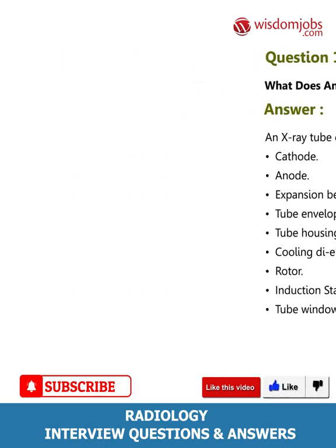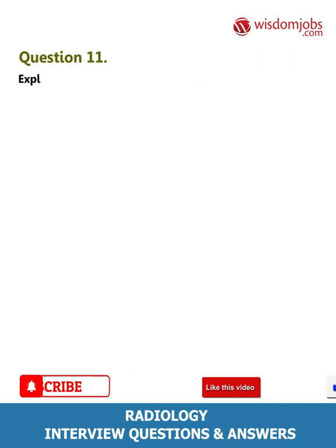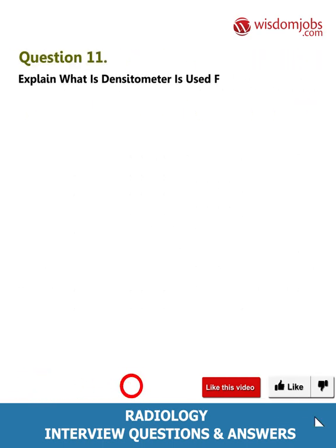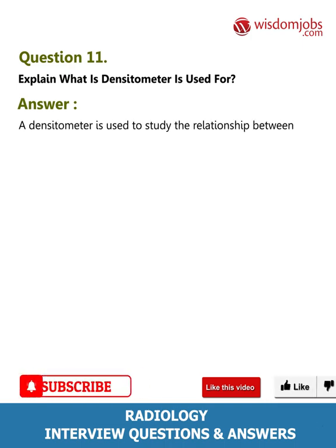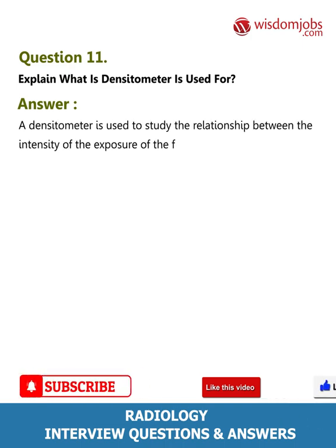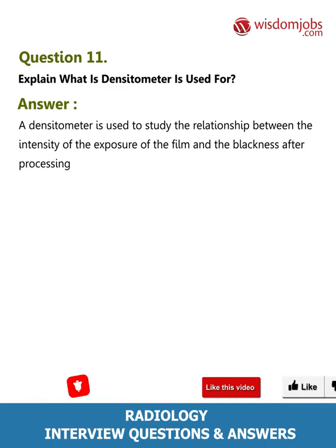Question 11: Explain what a densitometer is used for. Answer: A densitometer is used to study the relationship between the intensity of the exposure of the film and the blackness after processing.